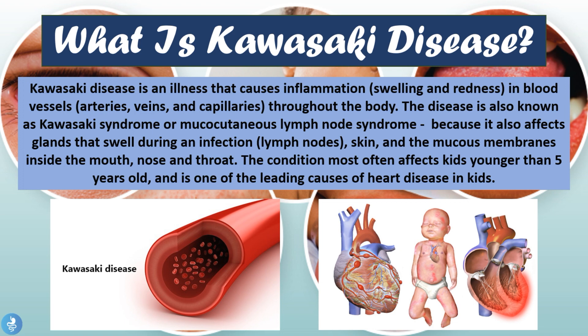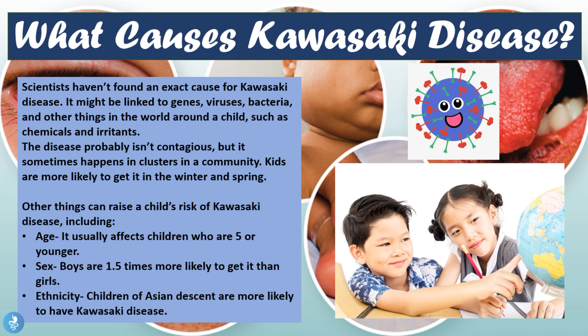Scientists haven't found an exact cause for Kawasaki disease, but it might be linked to genes, viruses, bacteria, and other environmental factors such as chemicals or irritants. The disease is probably not contagious, but sometimes happens in clusters within a community, and kids are more likely to get it in the winter and spring months compared to the fall and summer months.